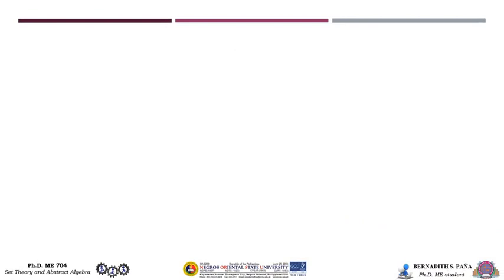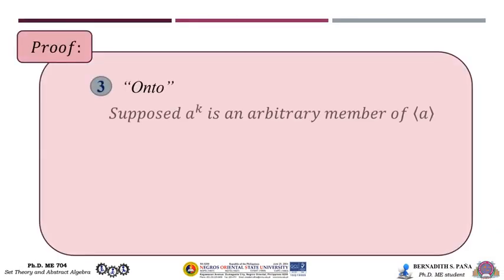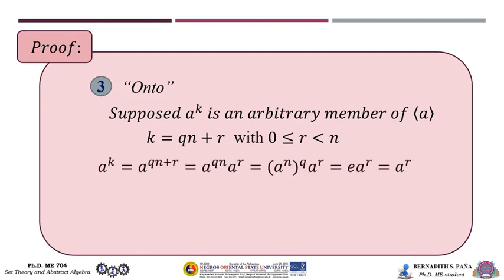The third step is to show that f is onto. Suppose a^k is an arbitrary member of ⟨a⟩. By the division algorithm, there exist integers q and r such that k = qn + r with 0 ≤ r < n. Then a^k = a^(qn+r) = a^(qn) · a^r = (a^n)^q · a^r = e^q · a^r = a^r, so that a^k ∈ {e, a, …, a^(n−1)}. Therefore, f is onto.